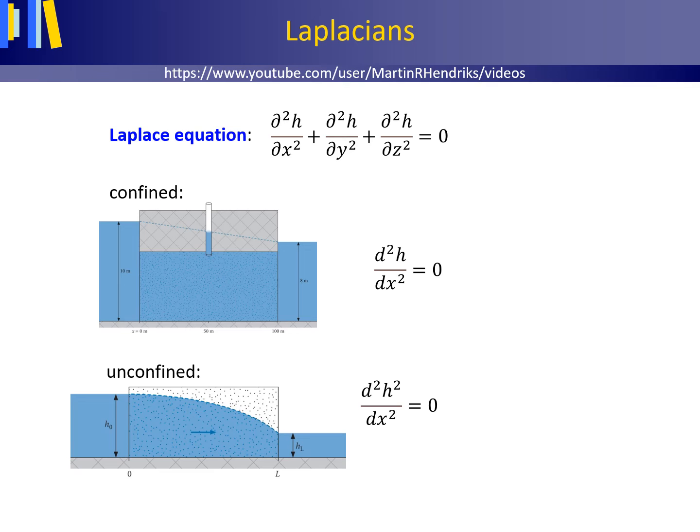We will see in other lectures that the Laplace equation for steady groundwater flow in an aquifer between two parallel fully penetrating canals, canals incised to the top of the lower impermeable layer, with different constant water levels as shown in these two figures, reduces to the following so-called Laplace equations, d squared h/dx squared equals 0 for confined groundwater, and d squared h squared/dx squared equals 0 for unconfined groundwater.